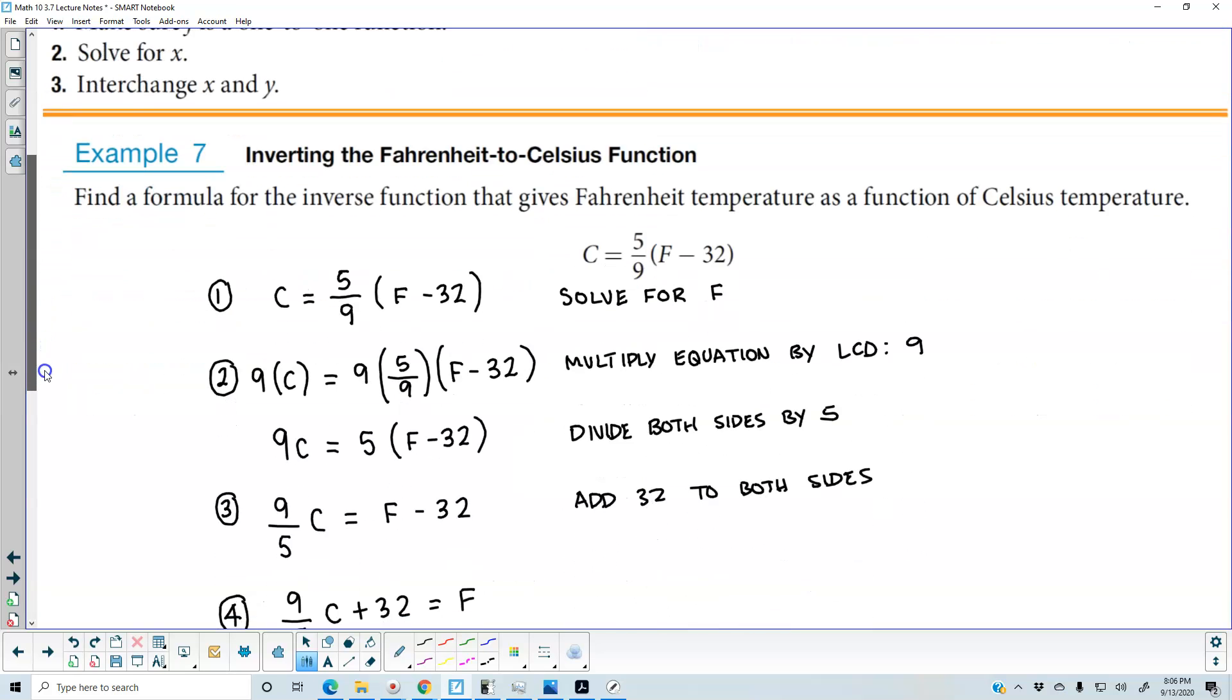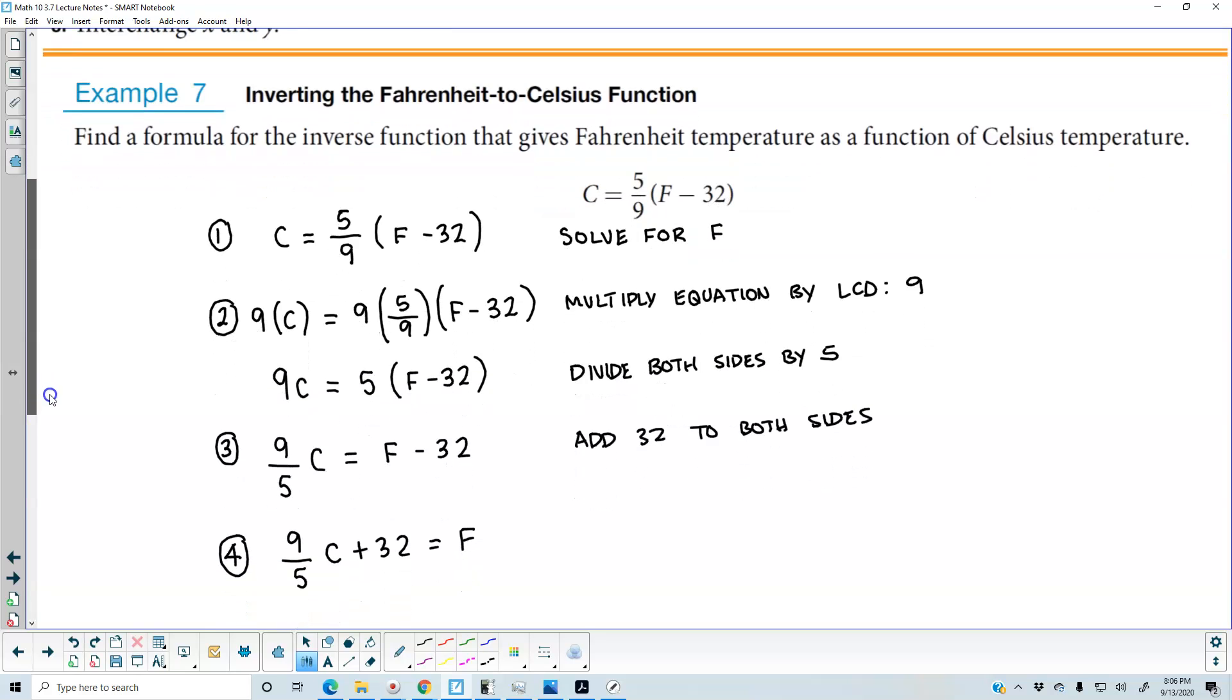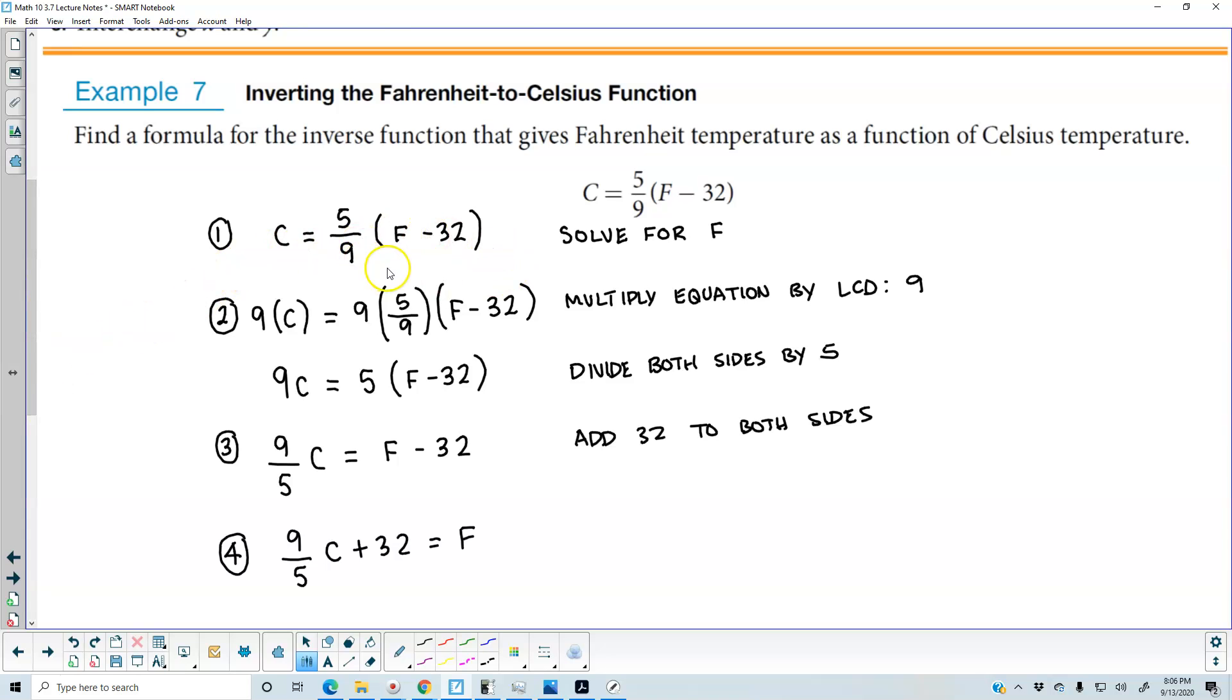For example 7, we're inverting the Fahrenheit to Celsius function. Find a formula for the inverse function that gives Fahrenheit temperature as a function of Celsius temperature. So we have a formula, C equals 5 ninths times F minus 32, and we want to solve for F, meaning isolate F.